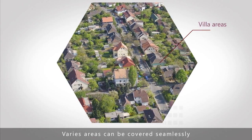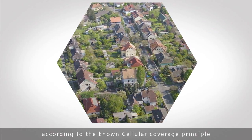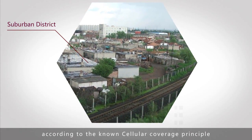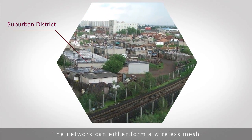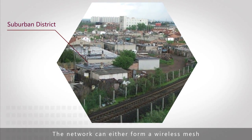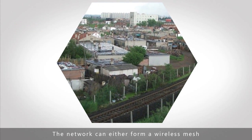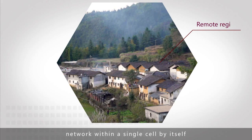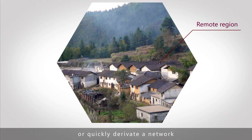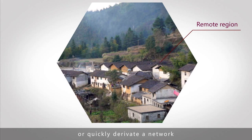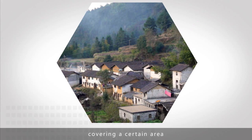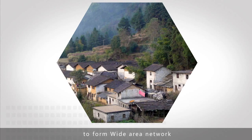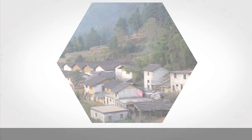Various areas can be covered seamlessly according to the known cellular coverage principle. The network can either form a wireless mesh network within a single cell by itself, or quickly derive a network covering a certain area to form a wide area network.